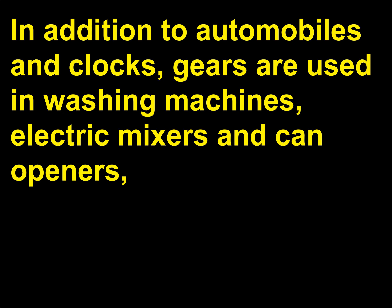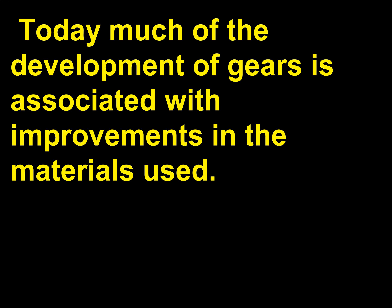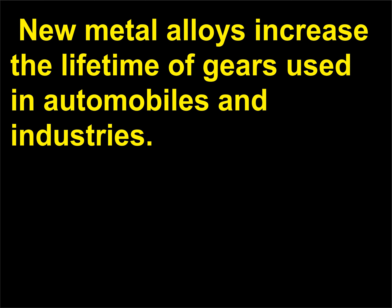In addition to automobiles and clocks, gears are used in washing machines, electric mixers, and can openers, as well as electric drills and hard drives and CD/DVD drives in computers. Today much of the development of gears is associated with improvements in the materials used. New metal alloys increase the lifetime of gears used in automobiles and industries. Consumer electronics uses plastic gears that require no lubricant and are quiet.